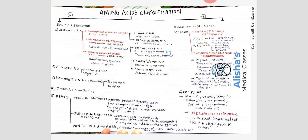Coming to aliphatic amino acids, there are three types. Number one: mono amino monocarboxylic — that means there is one amino group and one carboxylic group. Number two: mono amino dicarboxylic — one amino and two carboxylic groups. Number three: dibasic monocarboxylic — two amino groups and one carboxylic acid. Under mono amino, there are five subcategories: simple, branching, hydroxy, sulfur-containing, and amide-containing amino acids.